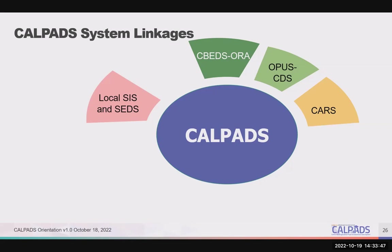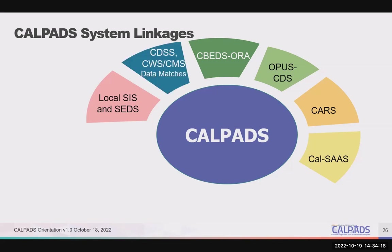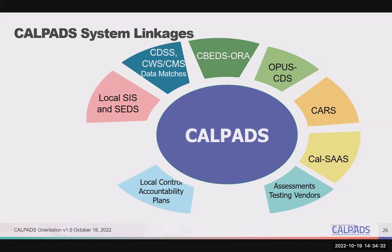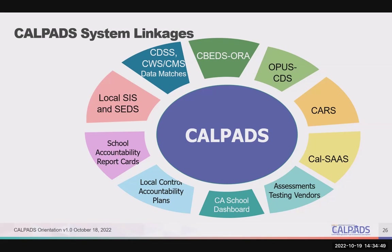CARS is used for reporting categorical program information. Data from CARS informs CALPADS which schools are Title I and whether they are school-wide or targeted Title I. CALSAS matches data from CALPADS with certificated staff credentials held by the California Commission on Teacher Credentialing, to identify potential misassignments as required by the state's ESSA — Every Student Succeeds Act — plan. Statewide data matches are used for directly certifying students as eligible for free and reduced-price meals and for identifying students as foster youth. Additional systems include the test operations management system for digital assessment, development and evaluation rubrics for local control accountability plans, populating school accountability report cards, and the indicators and subgroups used to create the California School Dashboard.